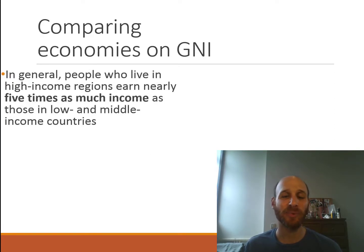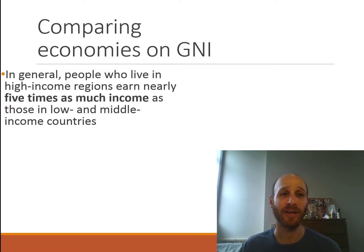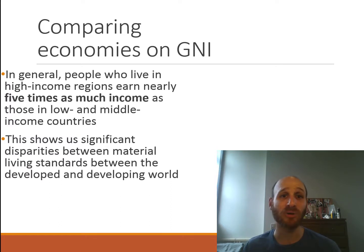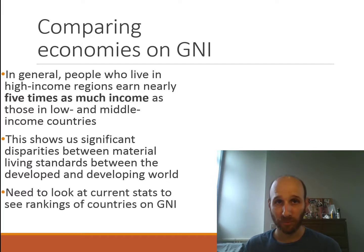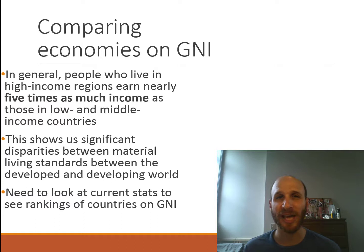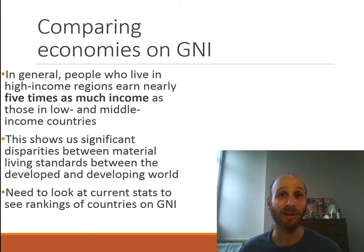If we compare economies on GNI — remember we're just focusing on income for now — in general, people who live in high income regions earn nearly five times as much income as those in low and middle income countries. This shows us a significant disparity or inequality between material living standards between the developed and the developing world. Remember, we're just focusing on material living standards, not broader quality of life, when we just look at GNI. This video is in general terms so it doesn't date, but you need to go online and have a look at the current stats to see how countries are ranked in terms of GNI. You can be assured that the most developed countries are much higher up.